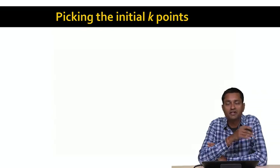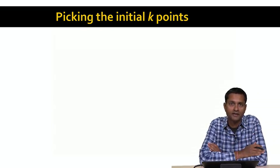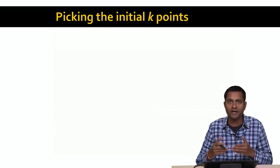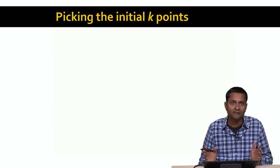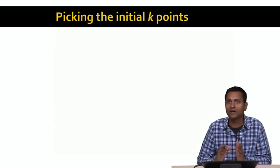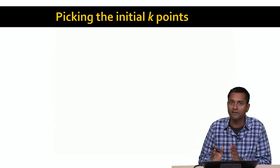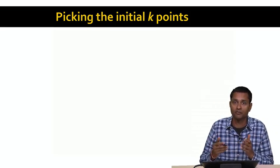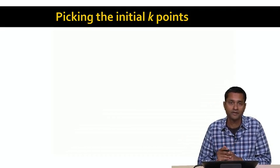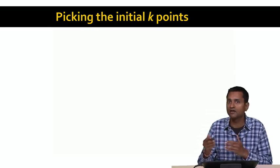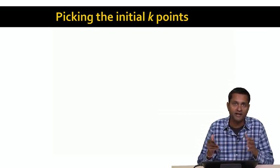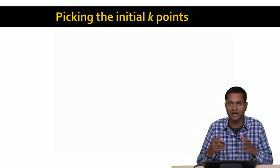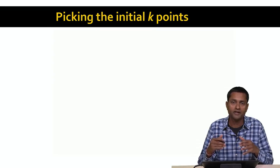The final question we need to address with k-means clustering is the picking of the k initial points to initialize the k clusters. In the examples we've seen, we picked the initial k points completely at random. That worked well in our example, but in general it may not work out so well. We might pick k points that all happen to be in the same cluster, in which case the final clustering won't reflect the actual clustering of the data. Or we might pick points that are outliers not near any of the real clusters. The final clustering depends on the initial k points we pick, so it's important that we pick the right k points to start from.